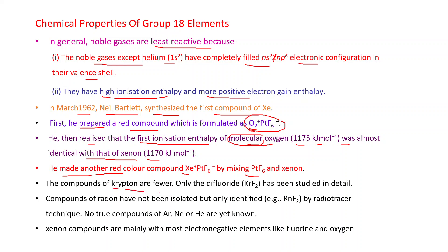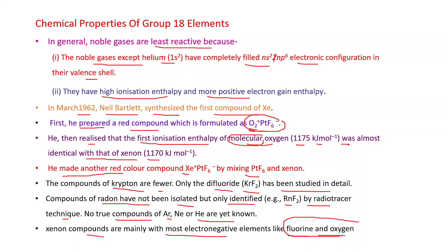The compounds of krypton are very few. Only the difluoride, KrF2, has been studied in detail. Compounds of radon have not been isolated but only identified, for example RnF2, by radiotracer technique. No true compounds of argon, neon, or helium are yet known. Xenon compounds are mainly with the most electronegative elements like fluorine and oxygen. That is because of the most electronegative nature of fluorine and oxygen, xenon can form compounds with them.